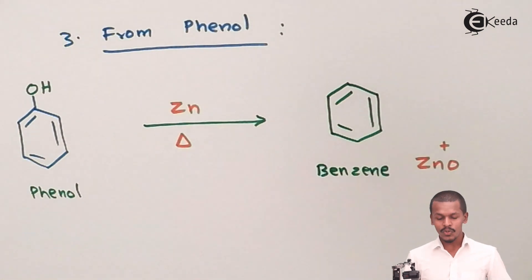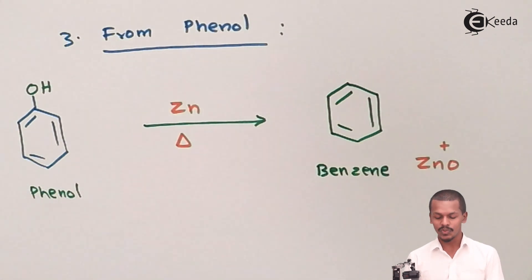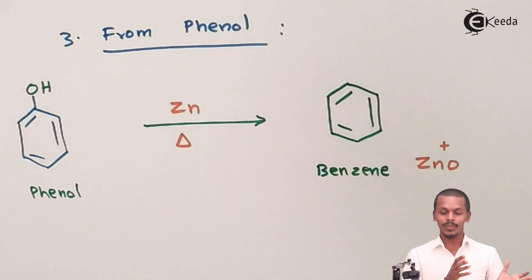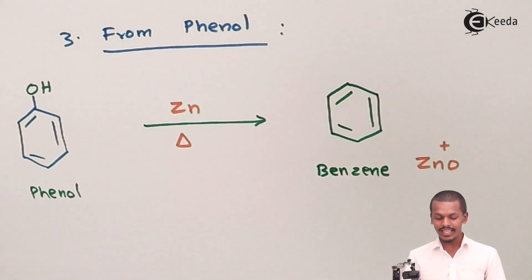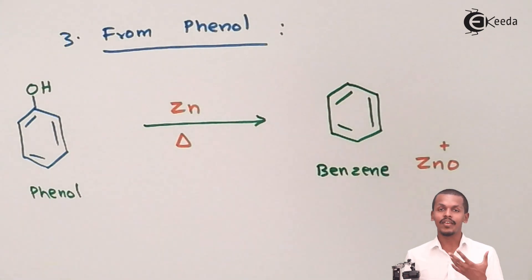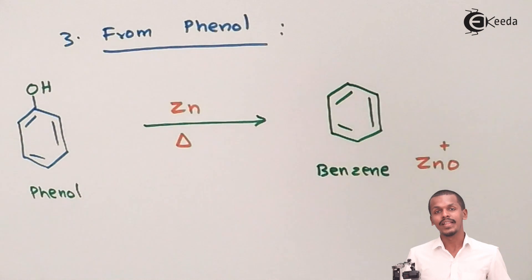The overall process that has taken place is basically a reduction process where we remove the oxygen atom. This is how we can prepare benzene from phenol. So this is how we have prepared benzene using different chemicals as well as different processes.